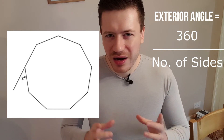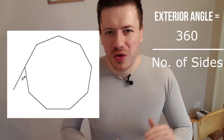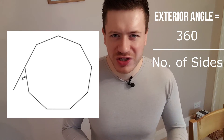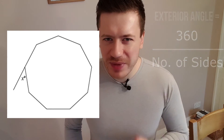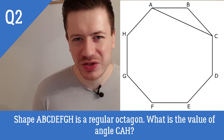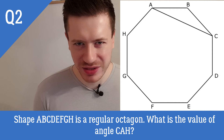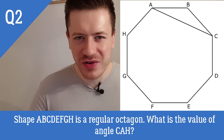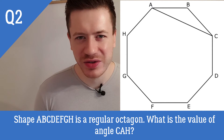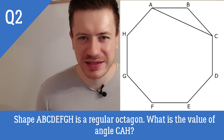Now I'm going to give you a harder question — this could appear on the medium to hard sections of the GRE or GMAT, so give it your best go. We have an octagon, and you need to find angle CAH. Can you combine everything you've learned in this video to work out angle CAH in this diagram?